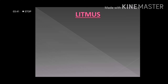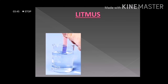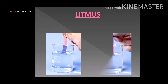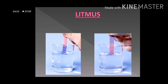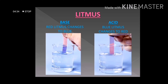Let us see how litmus changes color in the presence of different solutions. In the first figure, a liquid is being tested with red litmus paper, and in the second figure with blue litmus paper. We observe that the color of red litmus paper changes to blue, indicating the solution is a base. If the color of blue litmus paper changes to red, the solution is an acid.